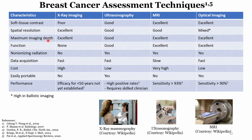For depth of imaging, x-ray using an ionizing approach is excellent because it passes through tissues easily. Ultrasound is good and MRI is also excellent. For optical imaging it depends on the operating wavelength — going to mid-infrared or near-infrared regions allows penetration over larger distances through breast tissues, while at lower visible wavelengths there is a lot of scattering.